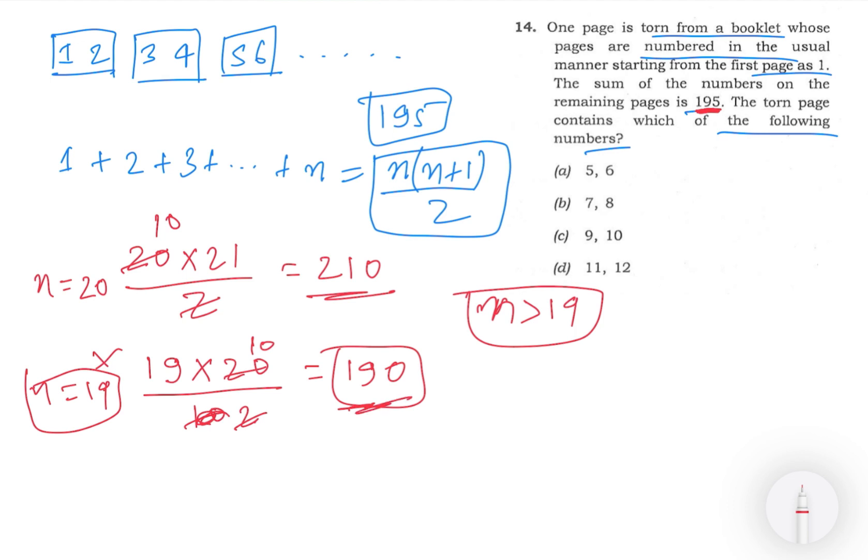We know that the value is 195. So first, let's try n equals 20. If n is equal to 20, then sum is 210. And our sum is 195. If we minus the two of them, it comes to 15.